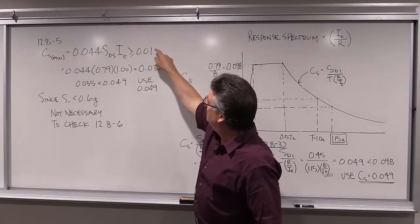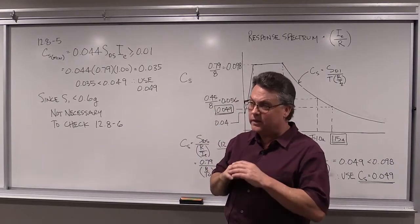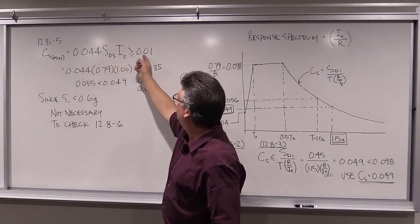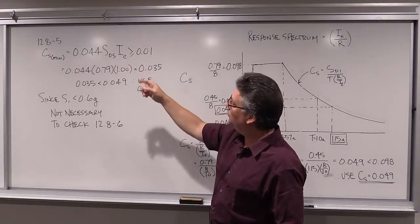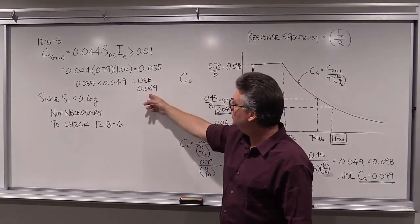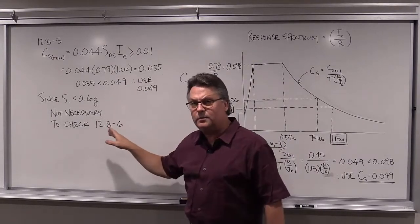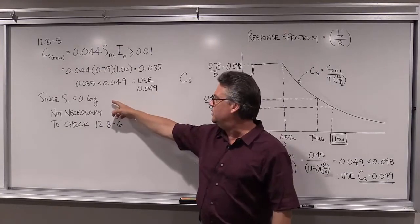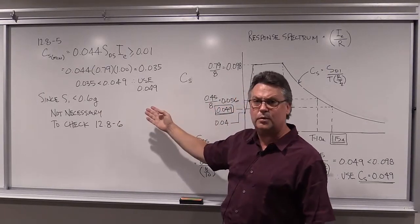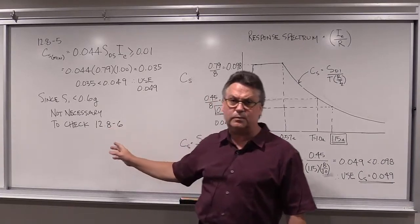To be complete we must also check the absolute minimum values, though these will rarely govern. Equation 12.8-5: CS ≥ 0.044 × SDS × I_E, but not less than 0.01, which gives 0.035 — less than our 0.049, so we still use 0.049. There is a second minimum check required when S1 is greater than 0.6g; we are below that threshold in this example, so it is not necessary to check equation 12.8-6 this time — but it will be needed in the next example.